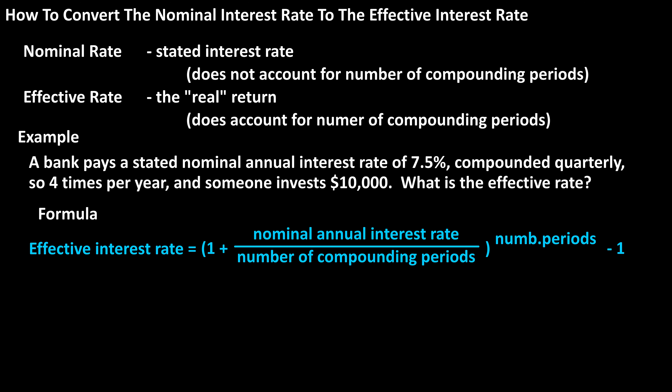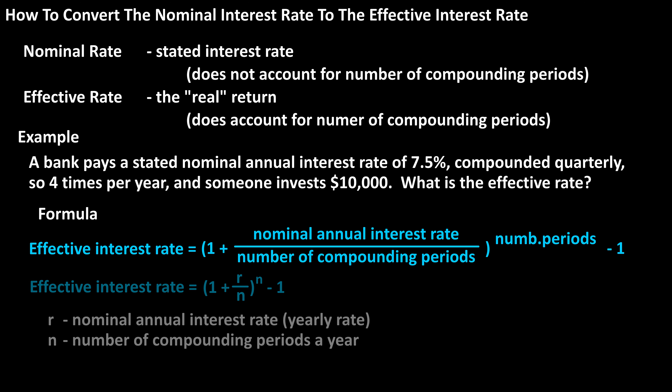The formula to calculate the effective interest rate, or to convert the nominal interest rate to the effective rate, is: the effective interest rate equals the quantity one plus the nominal annual interest rate divided by the number of compounding periods, raised to the number of compounding periods, minus one. Here is a shortened version of the formula with all of the variables listed.